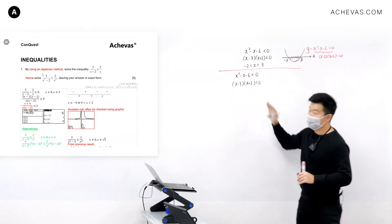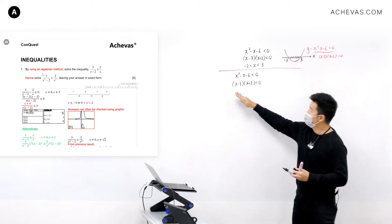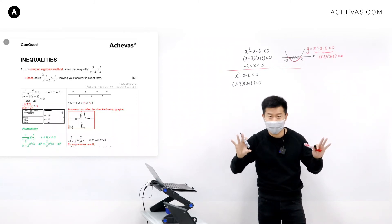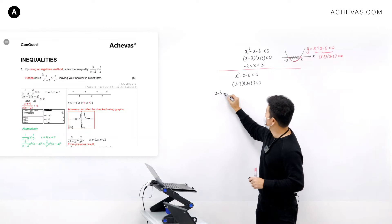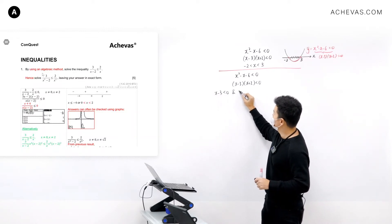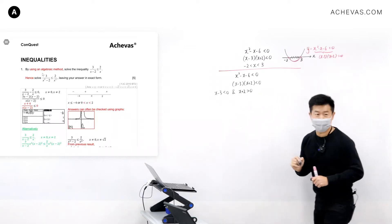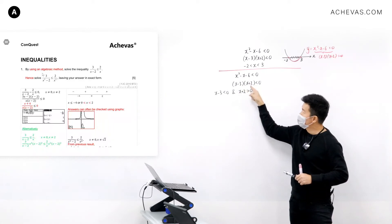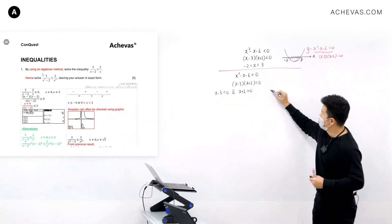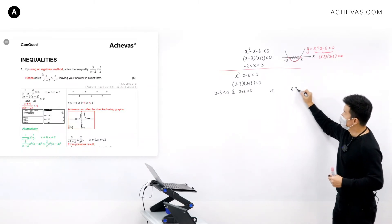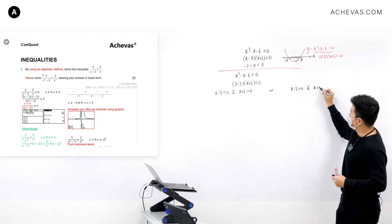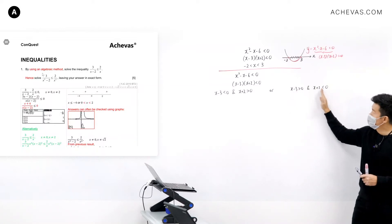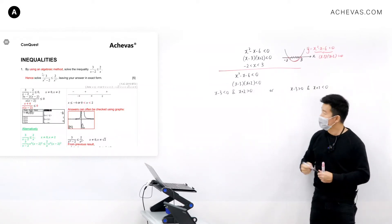In order for this expression to be less than zero, I can break this up into two distinct cases. Case one: x minus three is less than zero and x plus two is bigger than zero — negative times positive gives something less than zero. Case two: x minus three is bigger than zero and x plus two is less than zero — positive times negative also gives something less than zero.